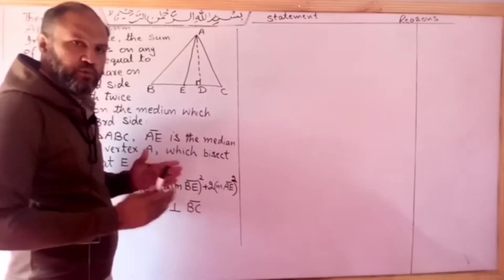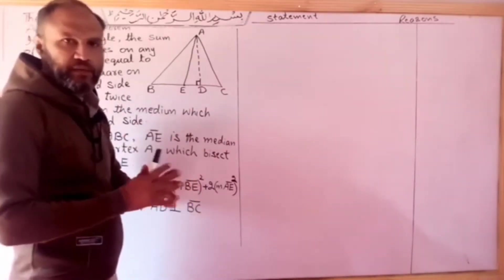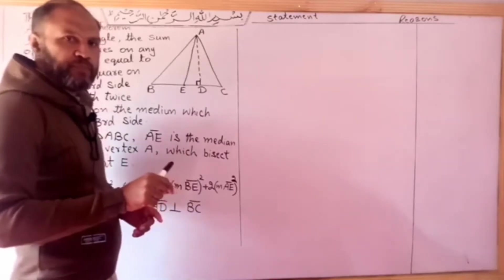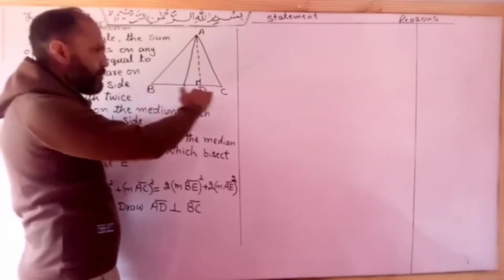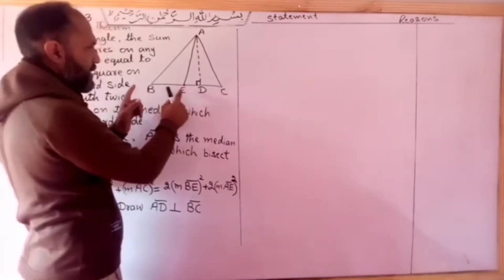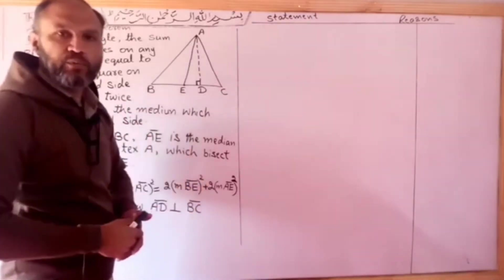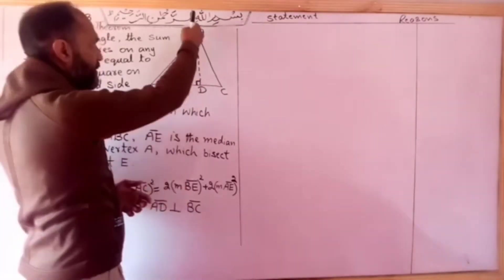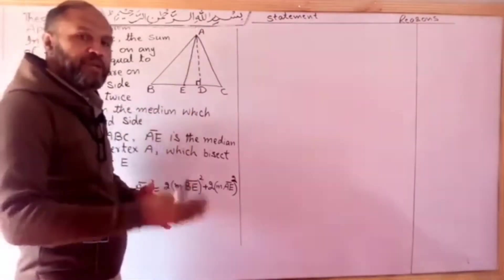E is the midpoint of BC, so BE is half of BC. AE is the median from A to the midpoint of the third side BC.